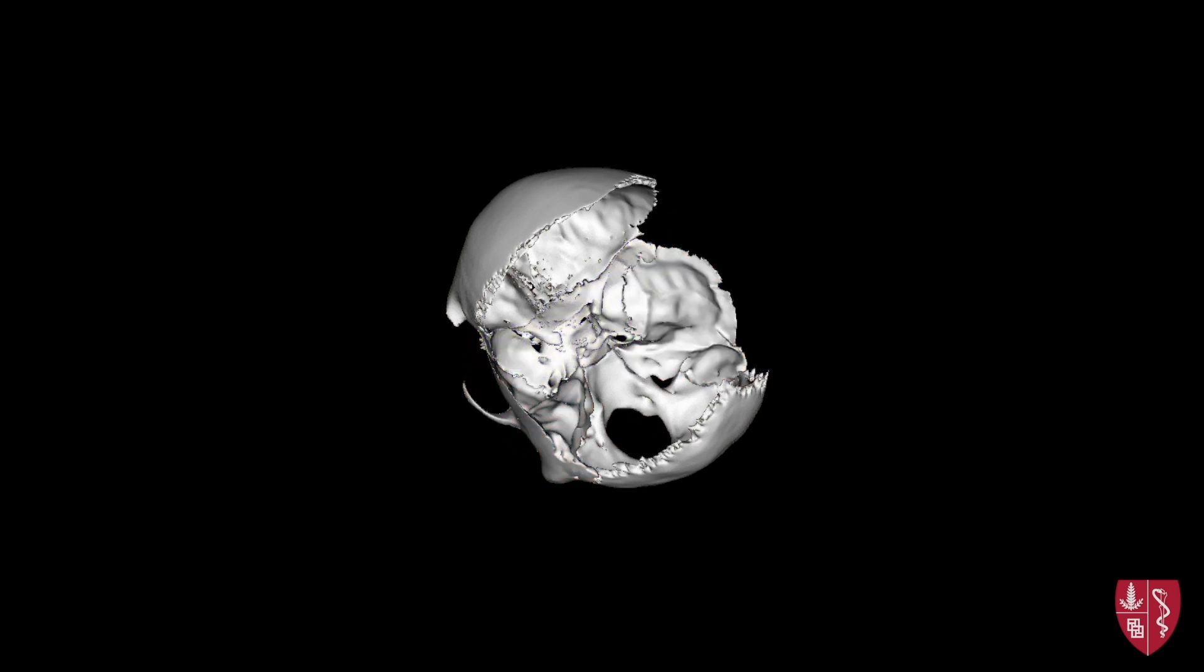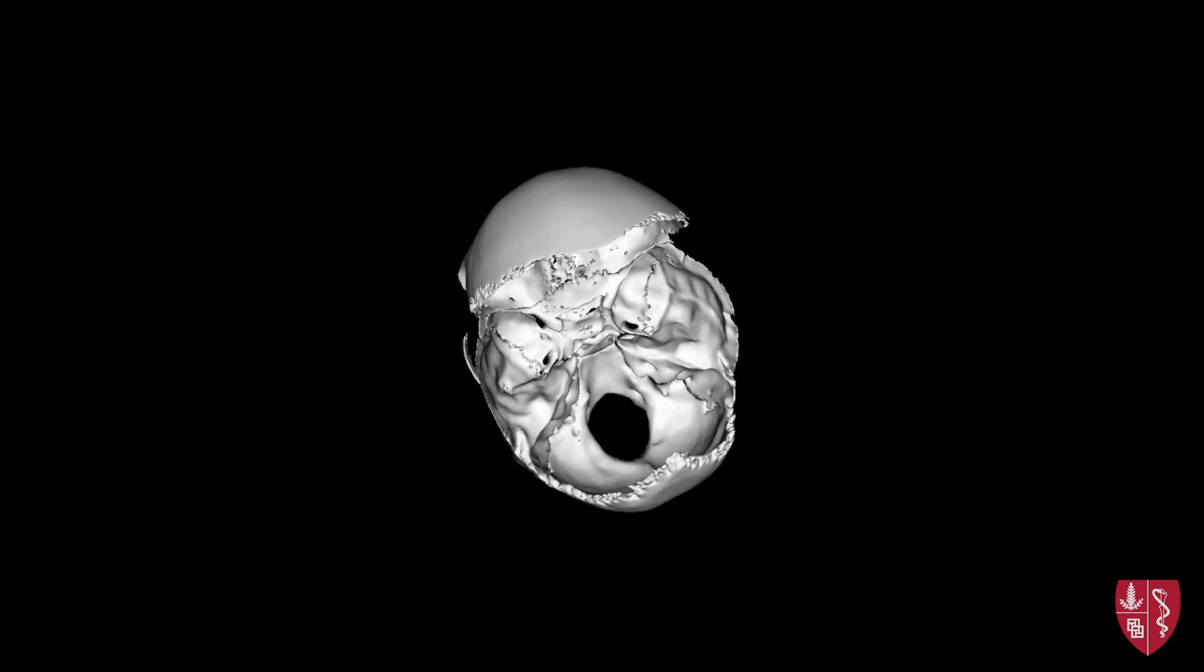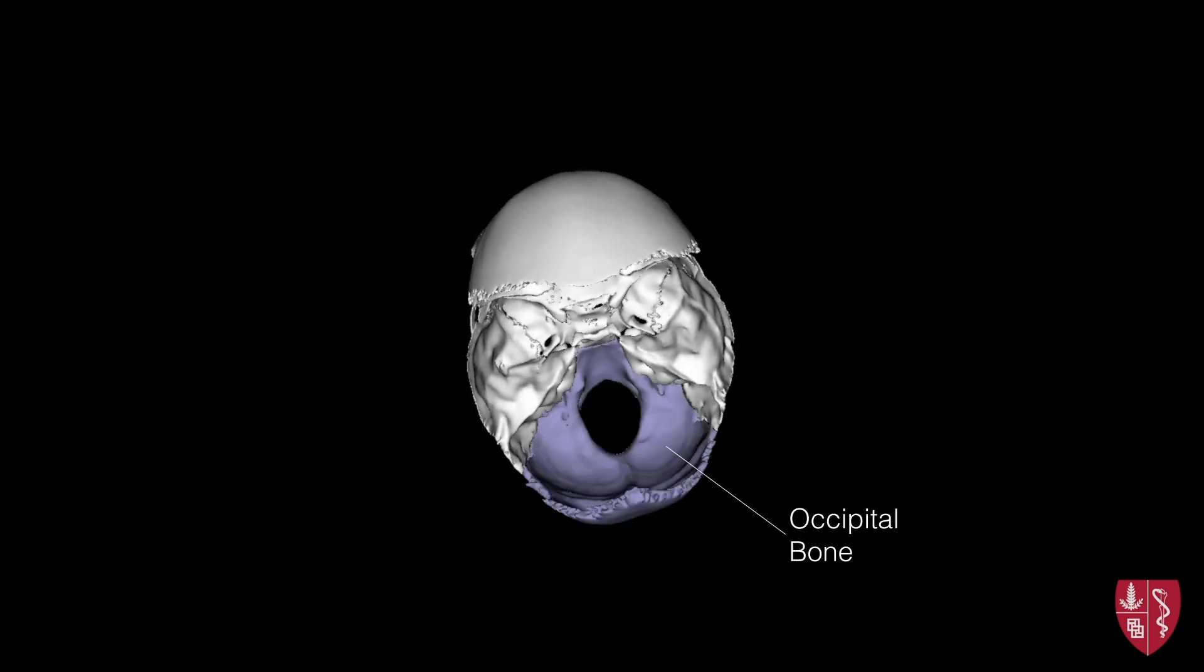Lastly, the posterior cranial fossa is predominantly made up by the occipital bone, as well as the portions laterally and posteriorly of the temporal bone.